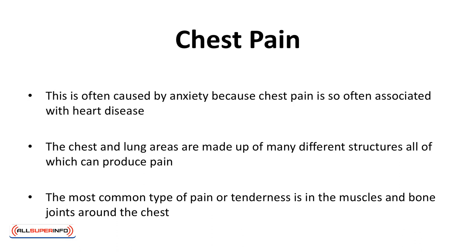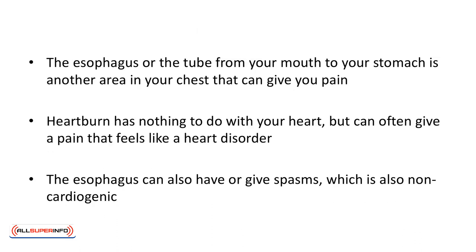The chest and lung areas are made up of many different structures, all of which can produce pain. The most common types of pain and tenderness are in the muscles and bone joints around the chest. The lining or pleura around the lungs can be associated with pain if it becomes inflamed or irritated, but the lungs themselves do not contain nerve connections that induce feelings of pain. The esophagus — the tube from your mouth to your stomach — is another area that can give you pain. Heartburn, or refluxing, has nothing to do with your heart but can give a pain that feels like a heart disorder. The esophagus can also have spasms, which are also non-cardiogenic.